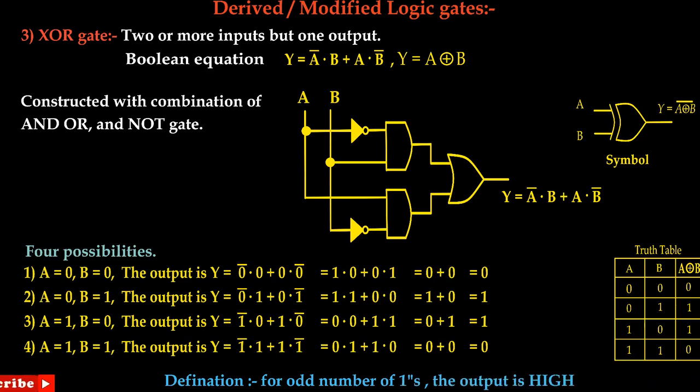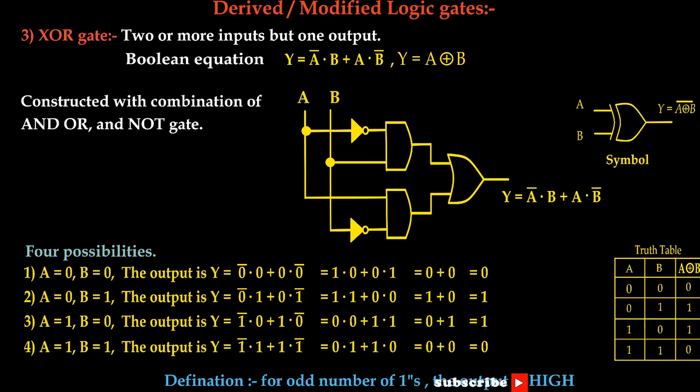So we can define the XOR gate as: for an odd number of high inputs, the output is high.